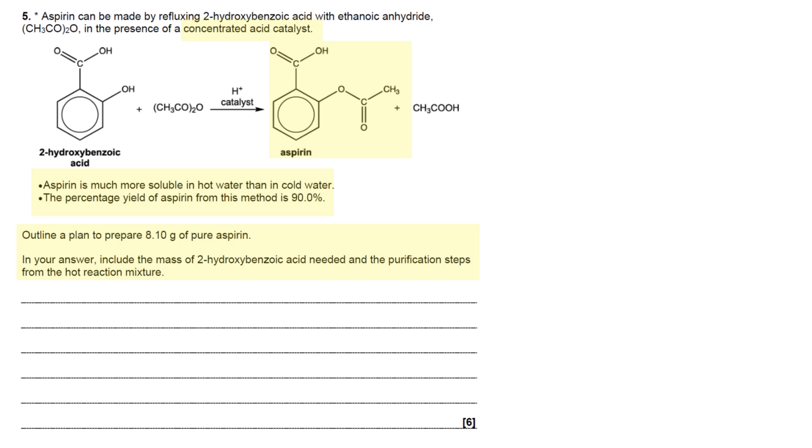Now we've had to think about it, we can start to consider how we might want to structure the answer. In the sentence that tells you what to do, it tells you to do two things: include the mass of 2-hydroxybenzoic acid needed and the purification steps from the hot reaction mixture. Those are the two parts to the plan they want you to outline. So to make your processing and construction of your answer easier, put it down as two subheadings and then you can put down the bullet points for each one.